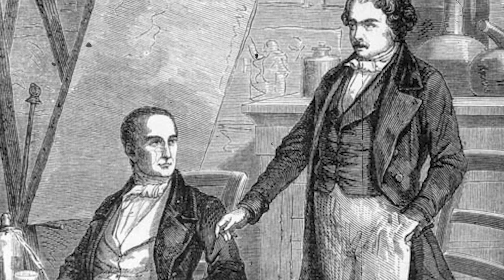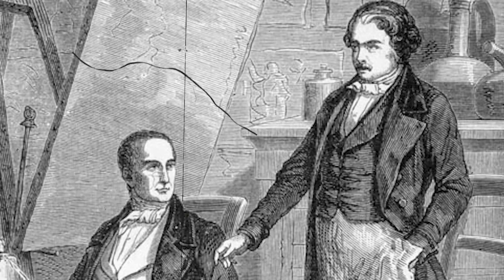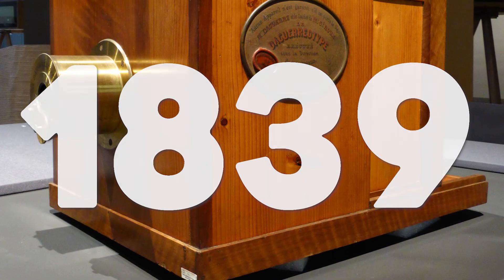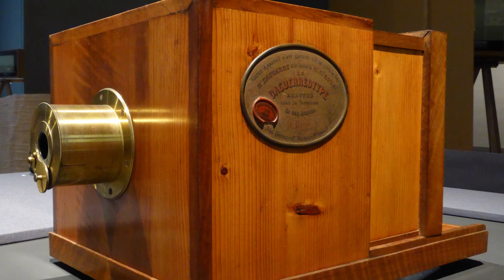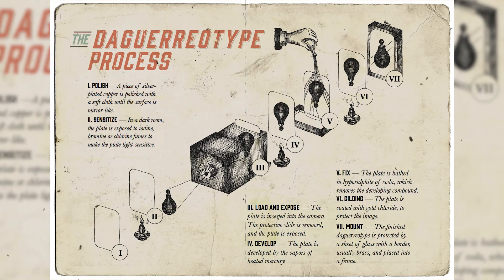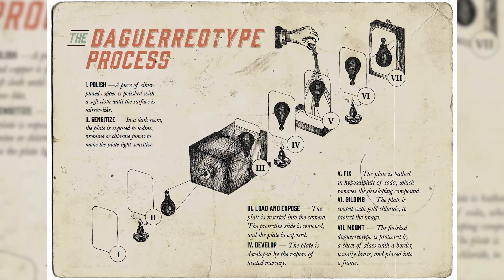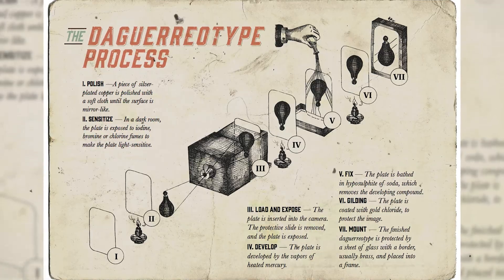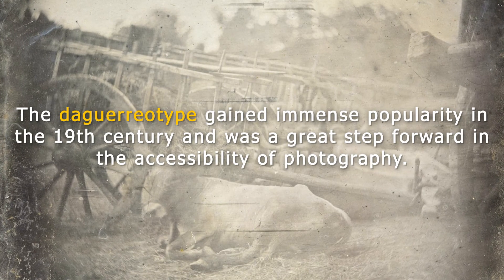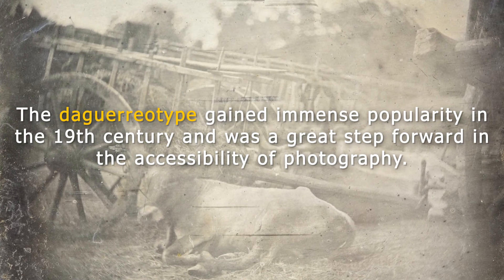Building upon Niépce's work, Louis Daguerre partnered with him, and after Niépce's death, continued his research. In 1839, Daguerre introduced the daguerreotype, a more practical and commercially viable photographic process. The daguerreotype involved exposing a silver-plated copper sheet coated with silver iodide to light. The image was then developed using mercury vapour, resulting in a unique, highly detailed photograph. The daguerreotype gained immense popularity in the 19th century and was a great step forward in the accessibility of photography.